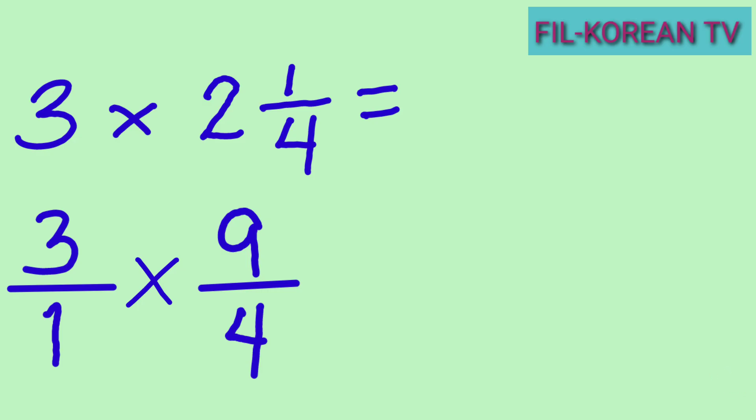They are both improper fractions now, so the next step is to multiply the numerators and multiply the denominators. Three times nine equals twenty-seven. One times four equals four. The answer is twenty-seven fourths.